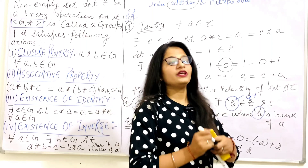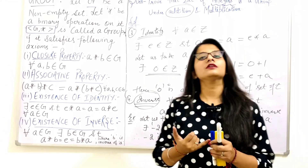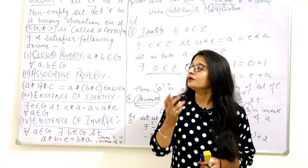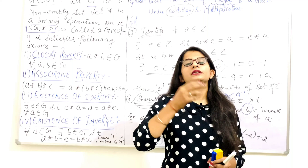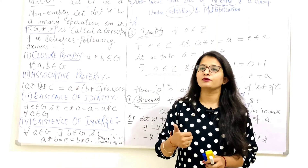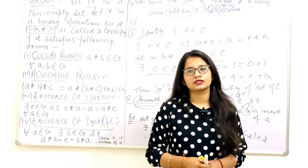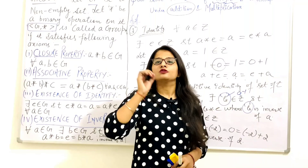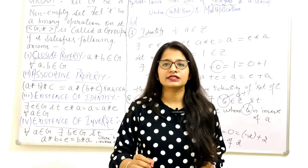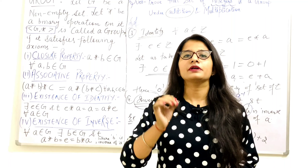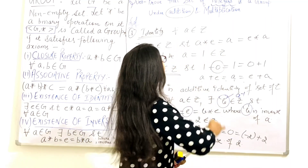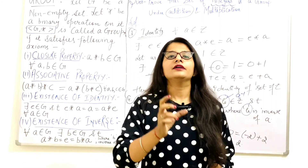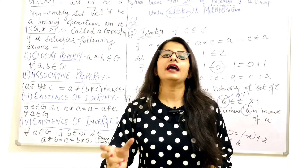We have now satisfied all four properties of a group: closure property, associative property, existence of identity, and existence of inverse — all checked under the operation of addition. Therefore, we can clearly say that the set of integers forms a group under the operation of addition.